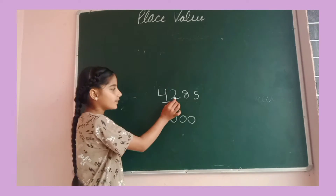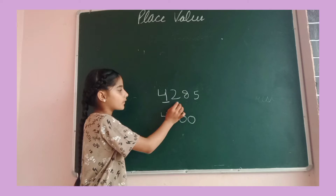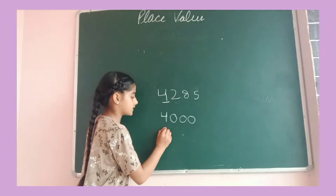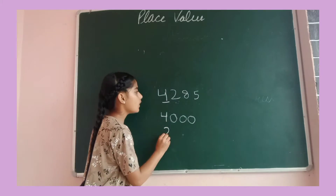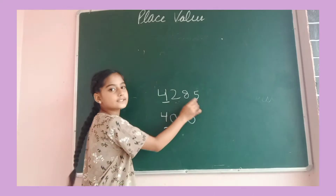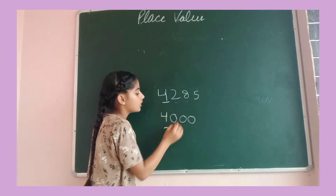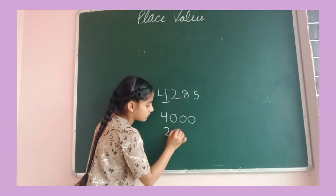In the same way, I have to find the place value of 2. I will first write 2, then count the digits after 2: one, two — so 2 zeros. And here is the place value of 2.